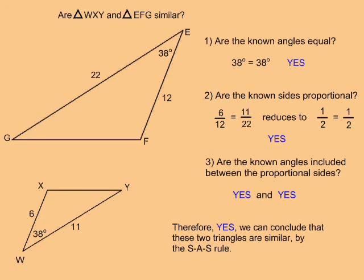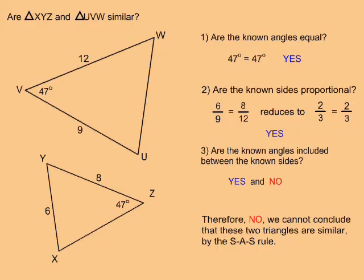Therefore, yes, we can conclude that these two triangles are similar by the SAS rule. In this example, are triangle XYZ and triangle UVW similar?